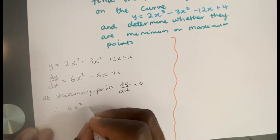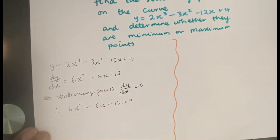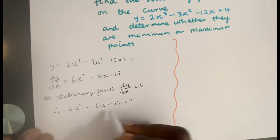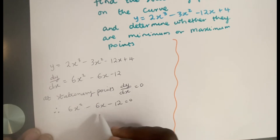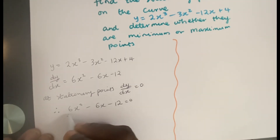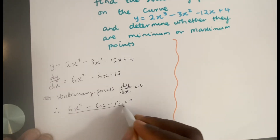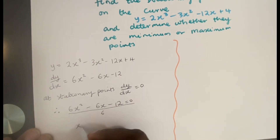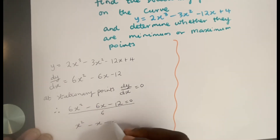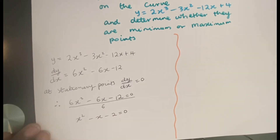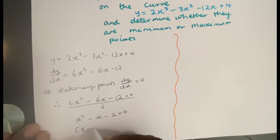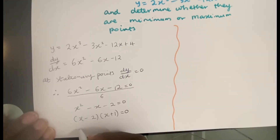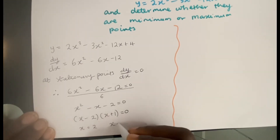So 6x² - 6x - 12 = 0. To make it easier to factorize, divide the whole equation by 6, giving x² - x - 2 = 0. Factorizing this gives (x - 2)(x + 1) = 0, which means x = 2 or x = -1.